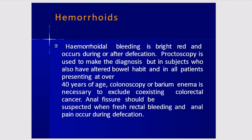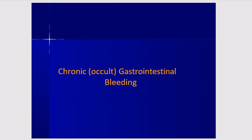Hemorrhoidal bleeding is bright red and occurs during or after defecation. Proctoscopy is used to make the diagnosis, but in patients with altered bowel habit and in all patients presenting over 40 years of age, colonoscopy or barium enema is necessary to exclude coexisting colorectal carcinoma. Anal fissure should be suspected when fresh rectal bleeding occurs with severe anal pain during defecation that continues for some time afterward.